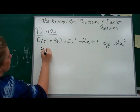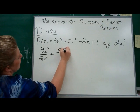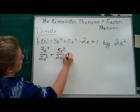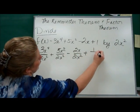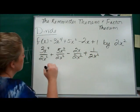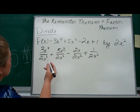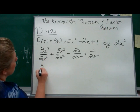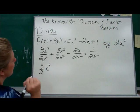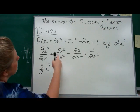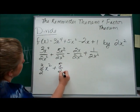So it's going to be 3x to the fourth over 2x squared, plus 5x squared over 2x squared, minus 2x over 2x squared, plus 1 over 2x squared. You're just dividing each individual term. So we do that and we simplify. This is going to be 3 halves — x to the fourth divided by x squared is going to be x squared — plus 5 over 2.